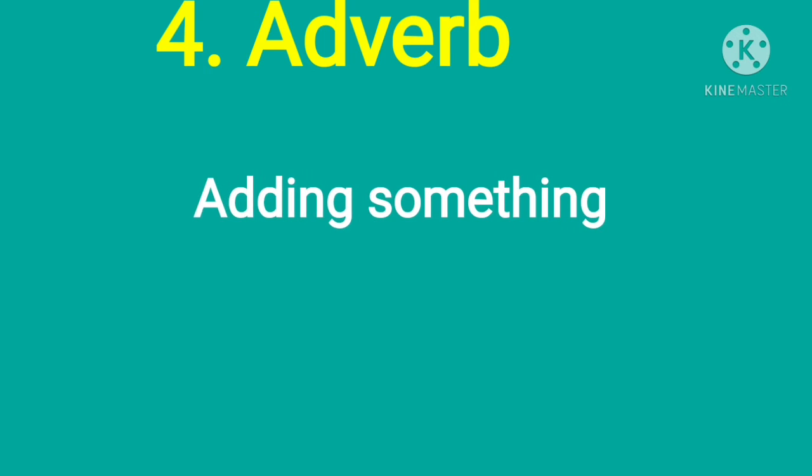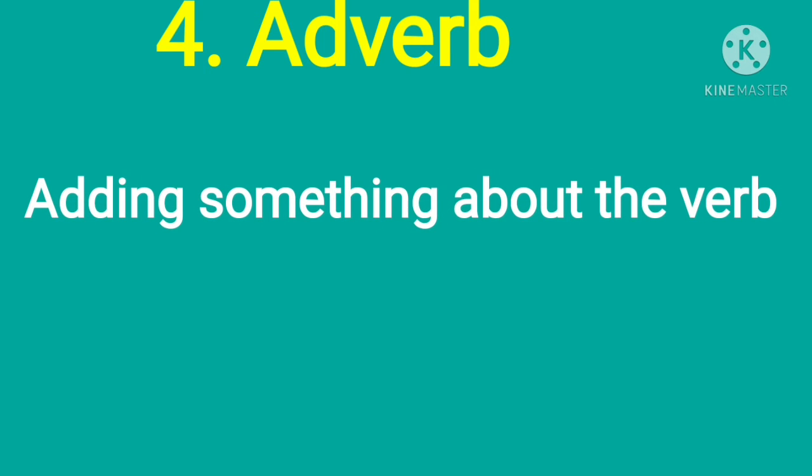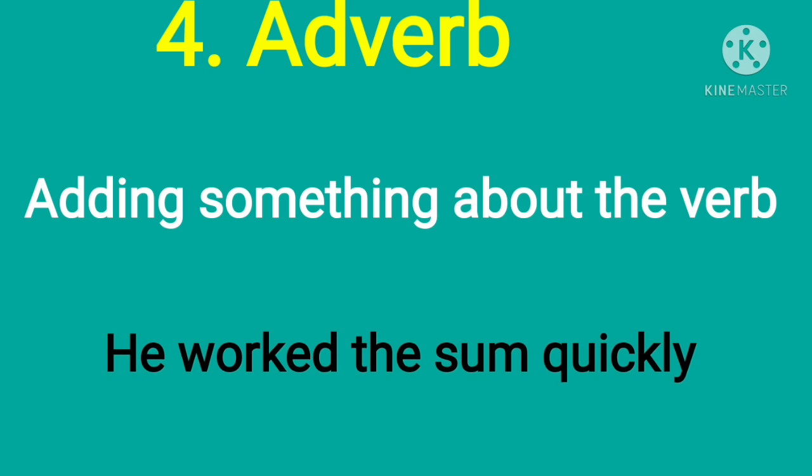Let us go to our next part of speech, that is adverb. When you hear the word adverb, the definition is hidden in the word itself: adding something about the verb. You can also add something about an adjective or another adverb, but we have to remember it's adding something about the verb. For example: he worked quickly. 'Worked' is the verb here, and we are talking about how he worked—he worked quickly.